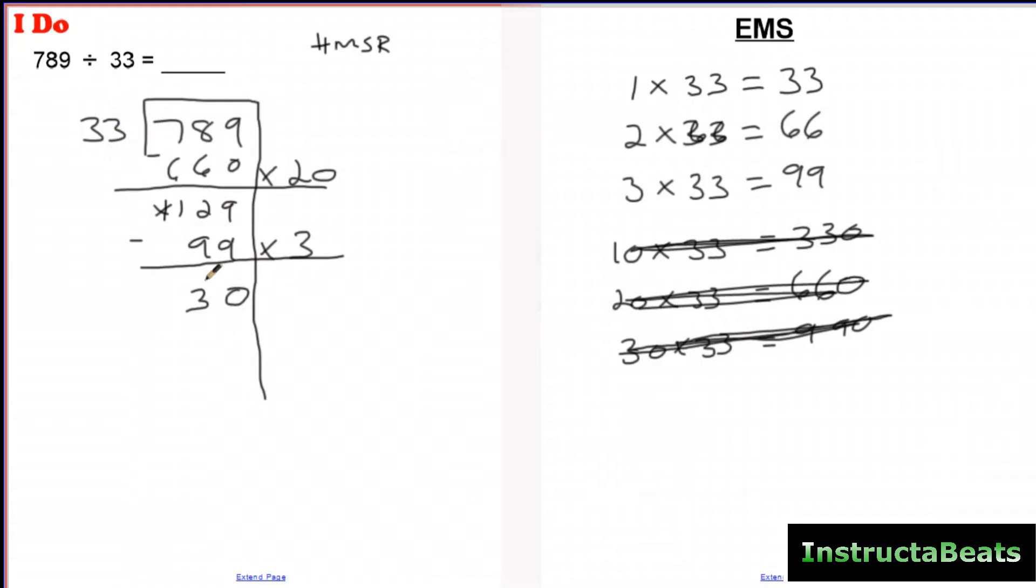Now 30 is less than 33. Okay, so this is going to be my remainder. So now I just add up the groups on the side and I have 23 groups. So the two goes in the tens place, the three goes in the ones place and I have a remainder of 30. So my answer for this is 23 with a remainder of 30.